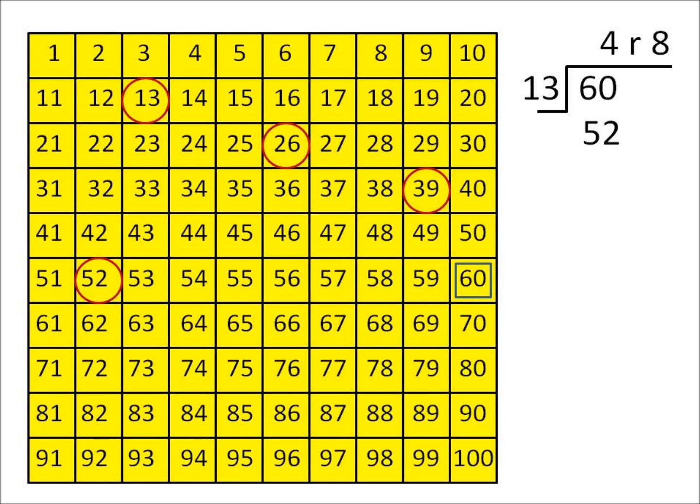As you can see we've counted off here and we get 13, 26, 39, 52 and we have circled 4 numbers. If they drop down again they're going to go over 60 so they know that's too much.